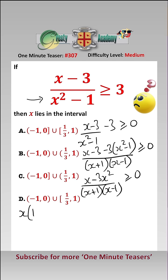Taking the x out gives us x times 1 minus 3x over x plus 1, x minus 1 is greater than or equal to 0.